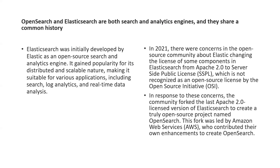These licensing details are quite in-depth — I'm not going into the details. The new license is not recognized by the Open Source Initiative. In response to this, the community forked the last Apache-licensed version of Elasticsearch, and from 2021 onwards they started a truly open source project named OpenSearch. This work was led by Amazon Web Services, who are now contributing to this OpenSearch project. Version 7.x supports backward compatibility, but certain later versions are not supported.